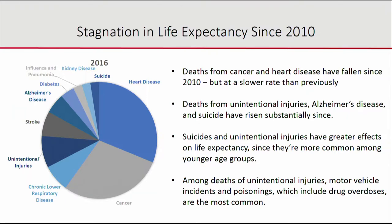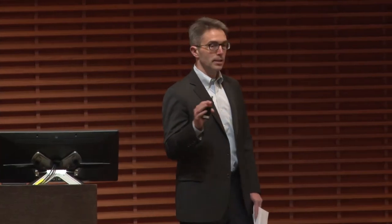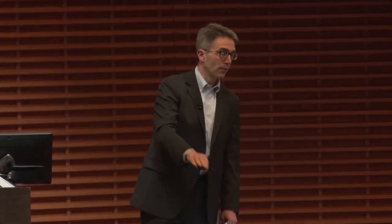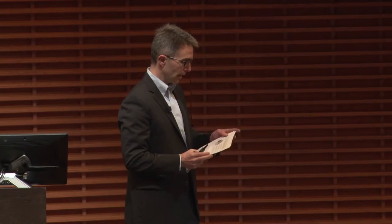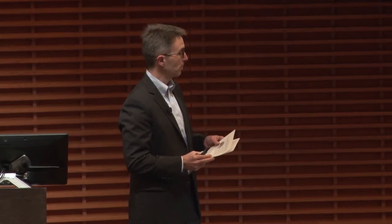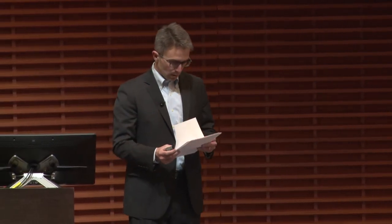Among deaths from unintentional injuries, motor vehicle accidents and poisonings — which include drug overdoses — are the most common. If you look at unintentional injuries over time, it's only fairly recently that the rate started to go up, partly because the fall in motor vehicle deaths was being largely offset by an increase in drug overdose deaths. The rise in opioid-related deaths has been really pretty scary.